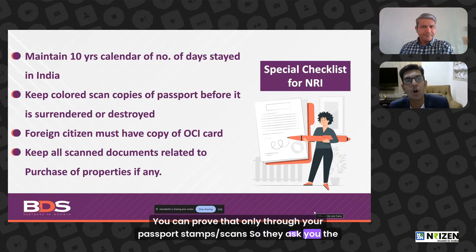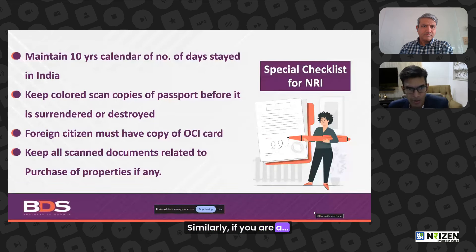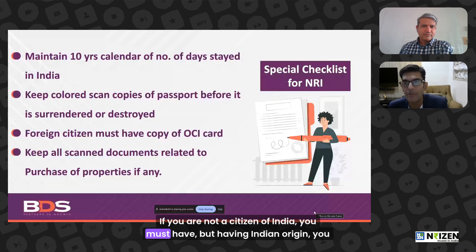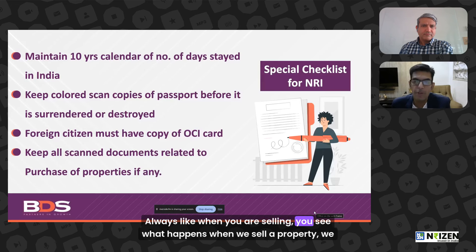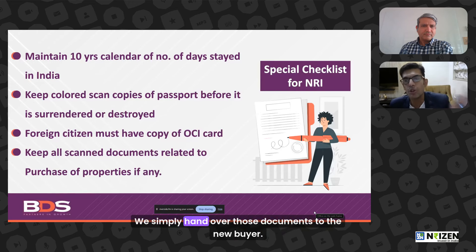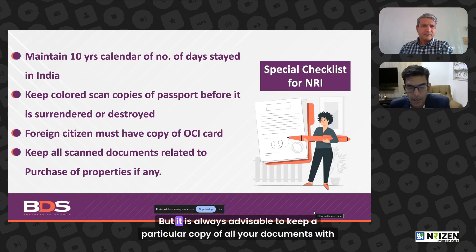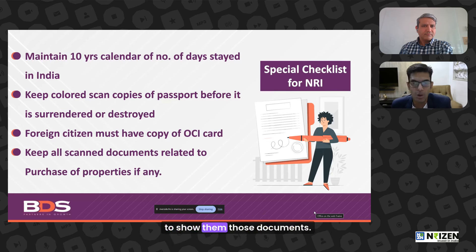The tax department asks for a copy of your colored passport scan. If you surrender or destroy your passport, always keep a scanned copy. Similarly, if you are not a citizen of India but of Indian origin, you should have a copy of your OCI card. When selling property, always keep a copy of all documents related to your property, because whenever there is a tax scrutiny, you will need to show those documents.